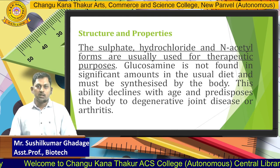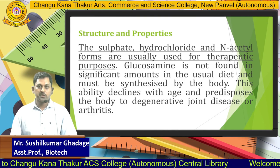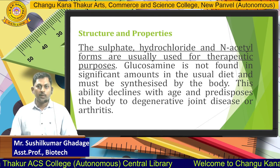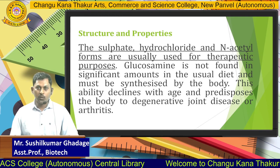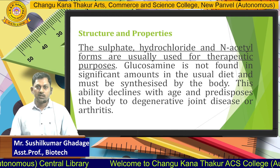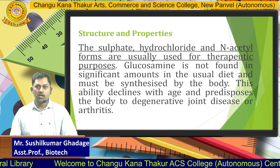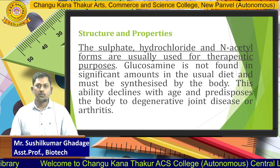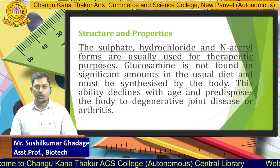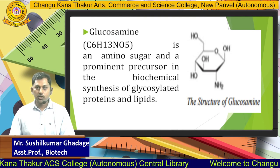The sulfate, hydrochloride, and N-acetyl forms of glucosamine are usually used for therapeutic purposes. Glucosamine is not found in significant amounts in the usual diet and must be synthesized by the body. This ability to self-synthesize declines with age, predisposing the body to degenerative joint diseases such as arthritis.